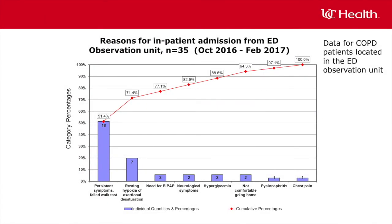Here is a Pareto chart for COPD patients located in the ED Observation Unit. It displays reasons for inpatient admissions from October 2016 to February 2017. We can see that 70% of the inpatient admissions were due to persistent symptoms, a failed walk test, and resting hypoxia or exertional desaturation. Tackling these two reasons would have the greatest impact on inpatient admissions.